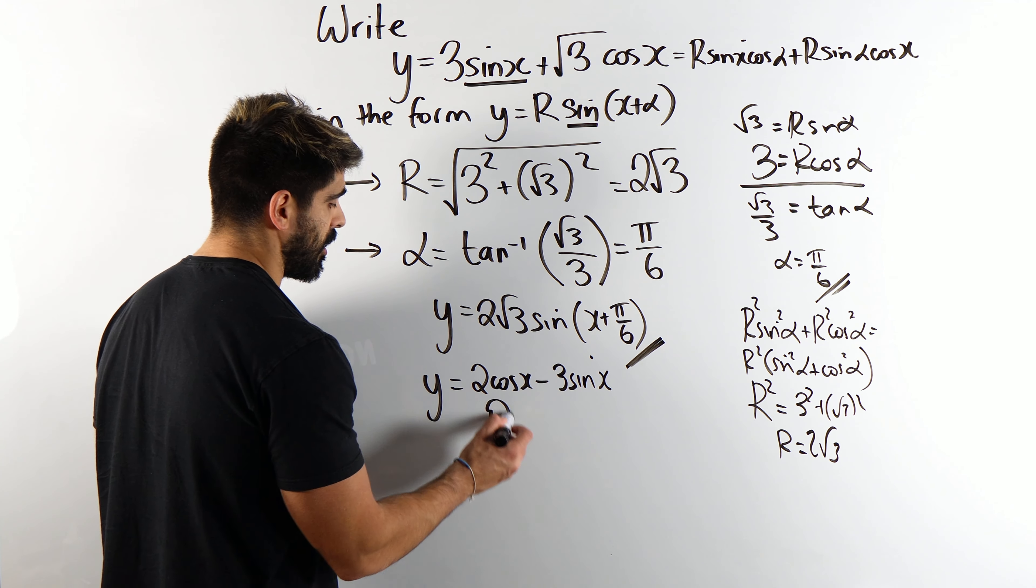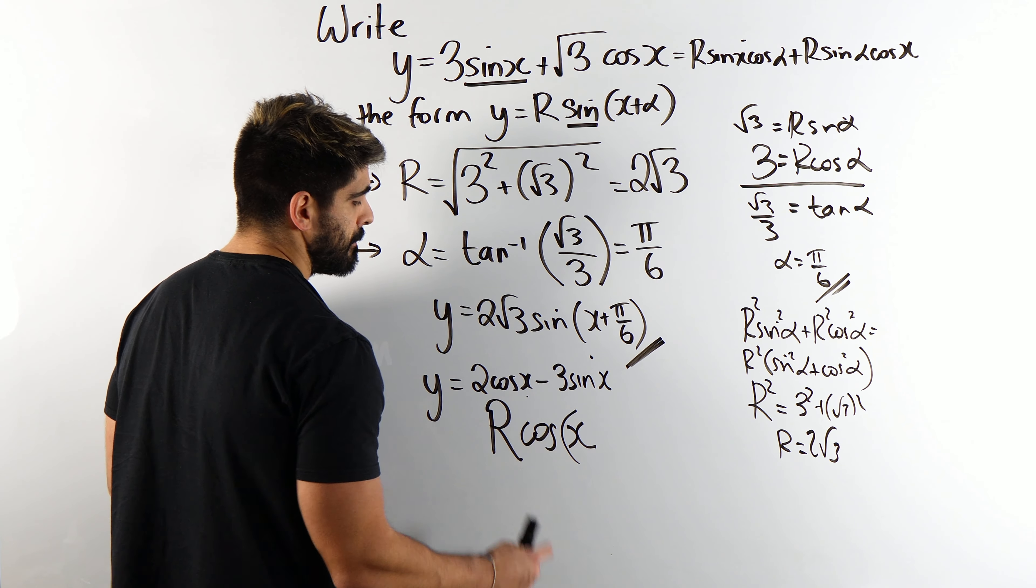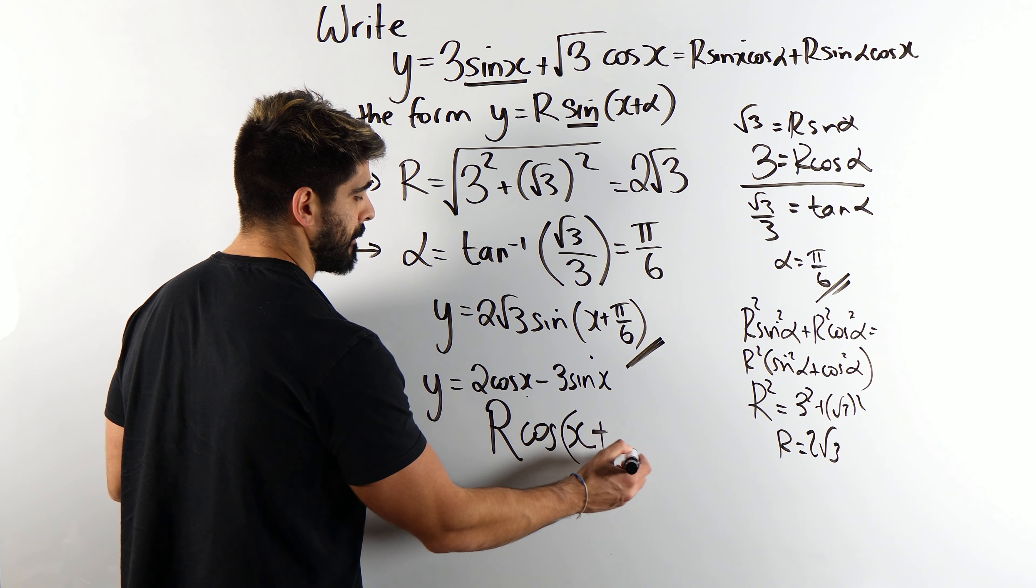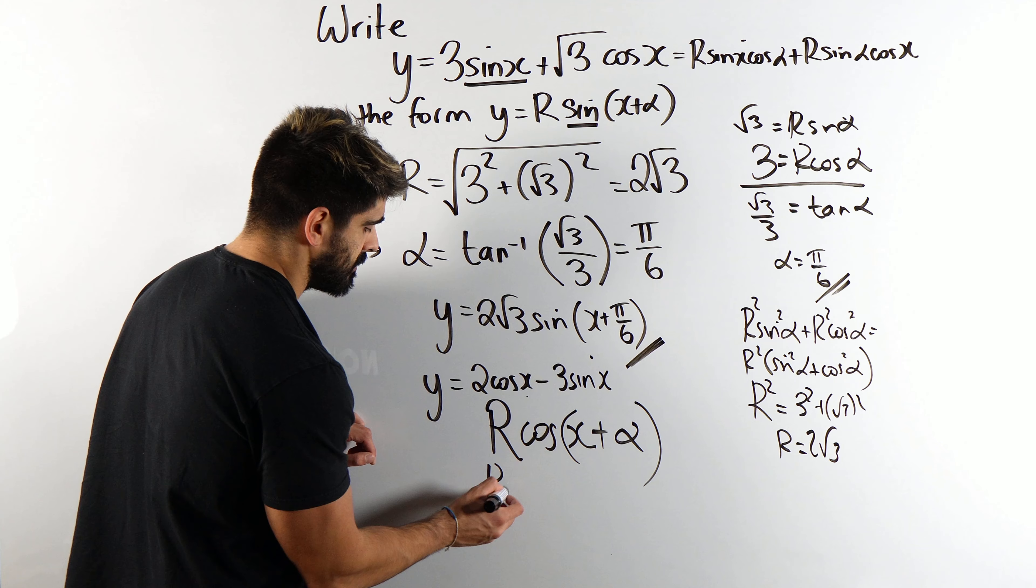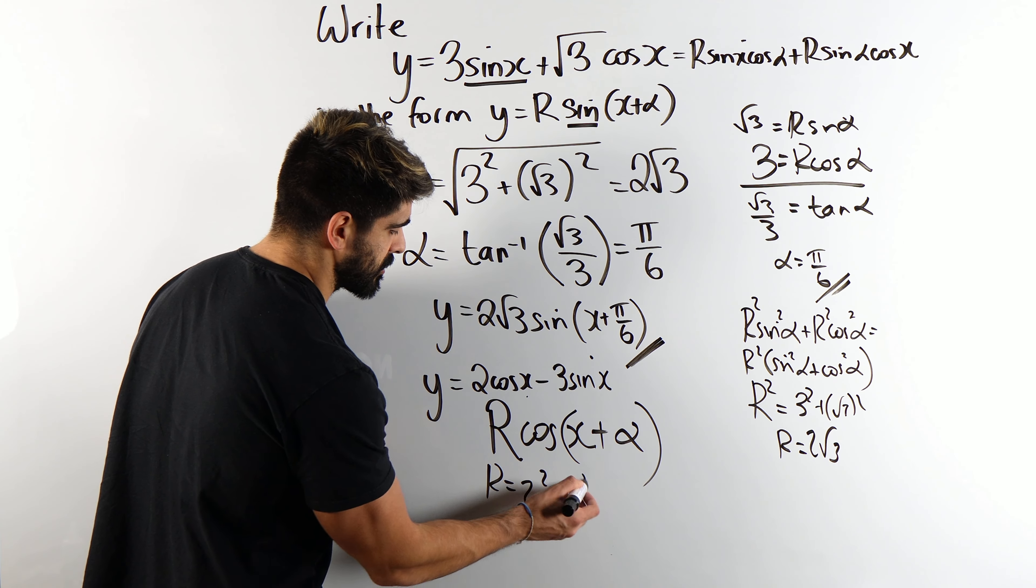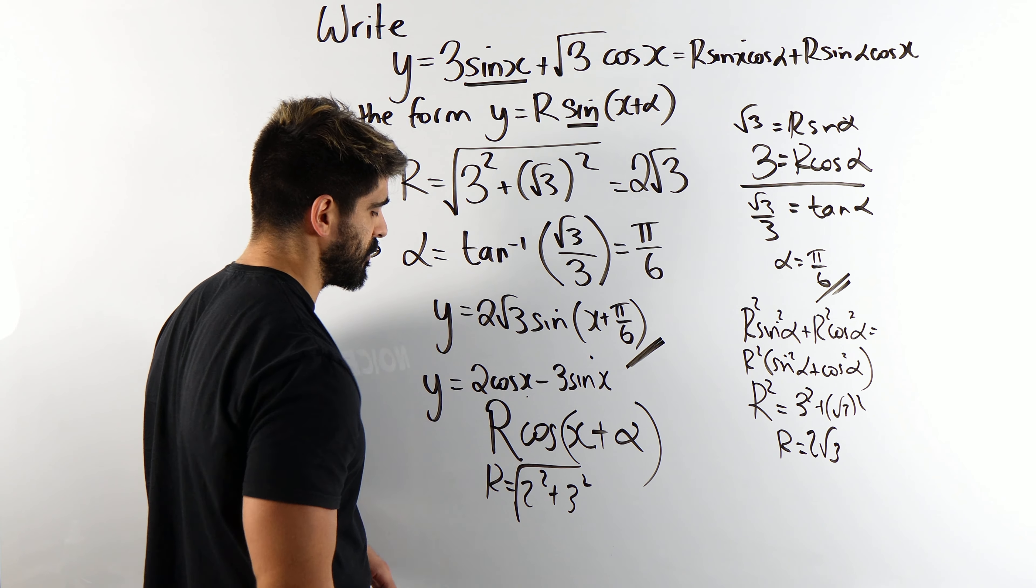You're going to choose R, the first function is cos, the angle is x, but cos changes the sine so become plus alpha. Then R is 2 squared plus 3 squared rooted. Can you see I didn't take into account the negative? It doesn't matter. We only look at the coefficients.